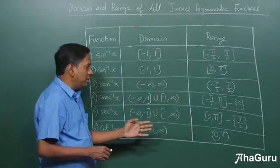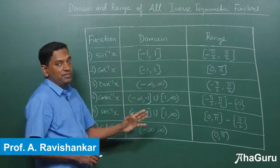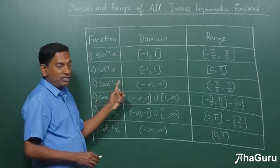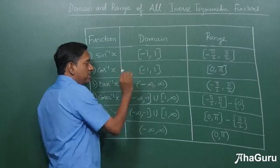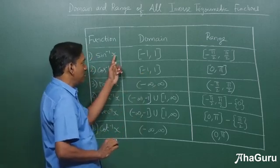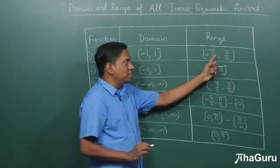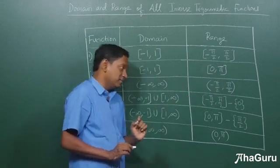Here, in this one table, we have given the domain and range of all the inverse trigonometric functions. So if you take sine inverse and cos inverse, their domains are the same: minus 1, 1 and minus 1, 1. That means x has to be such that mod x is less than or equal to 1, and the ranges are minus pi by 2 to pi by 2 for sine inverse and 0 to pi for cos inverse.